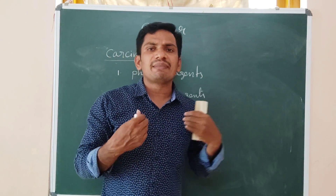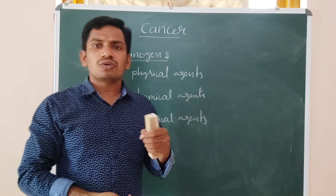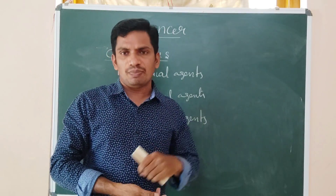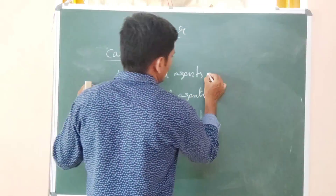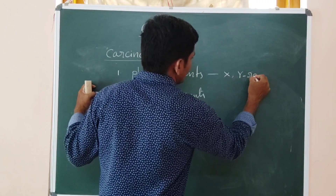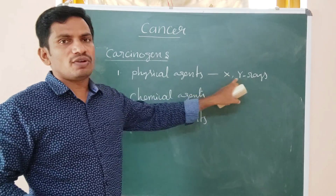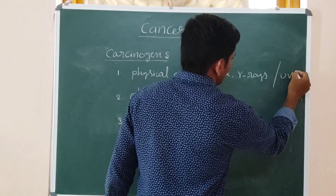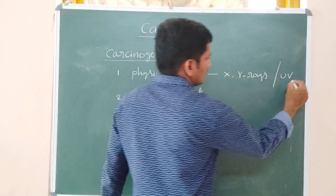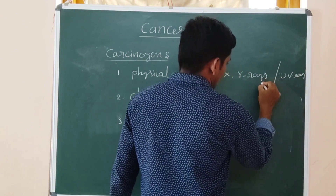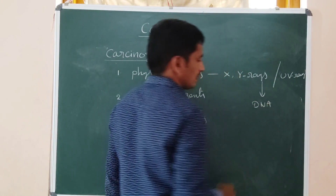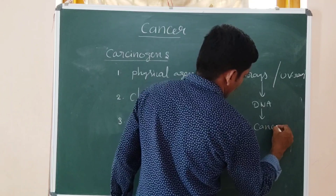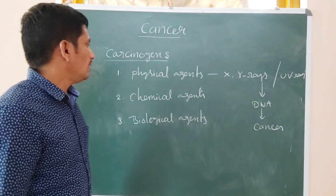In abnormal cells there are also some oncogenes, but when they react with these carcinogenic agents, they become neoplastic in nature. Physical agents include X-rays and gamma rays, which are ionizing radiation, and UV rays — ultraviolet rays — which are non-ionizing rays. These can damage DNA, and when DNA is damaged, the cell automatically becomes cancerous in nature. Chemical agents include tobacco, which causes lung cancer.